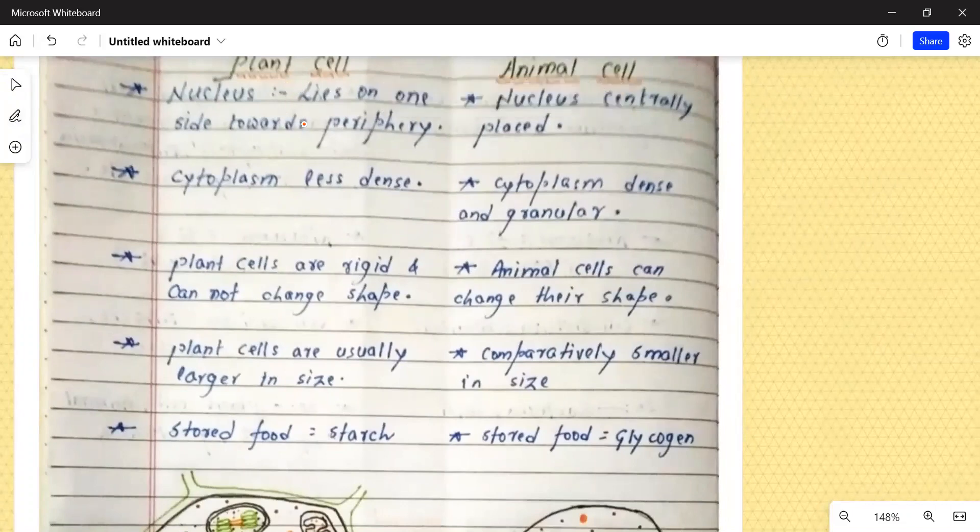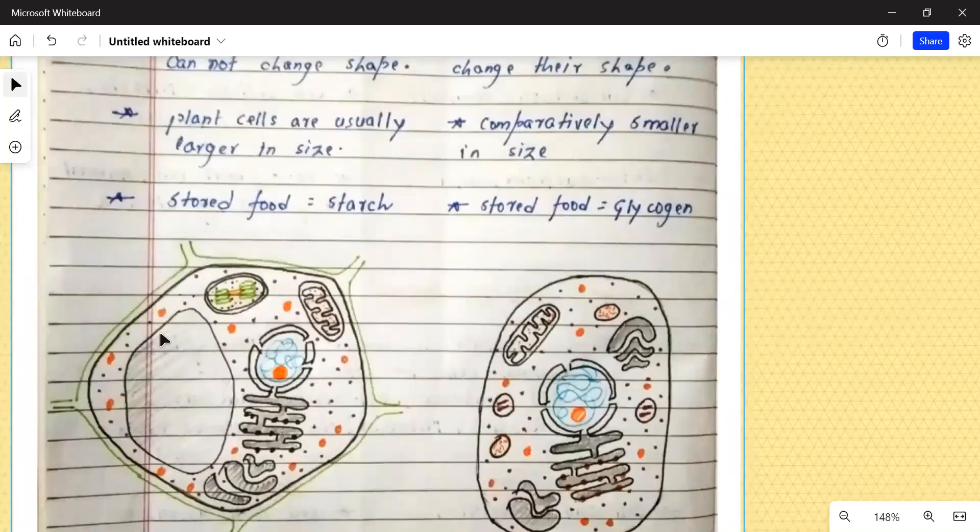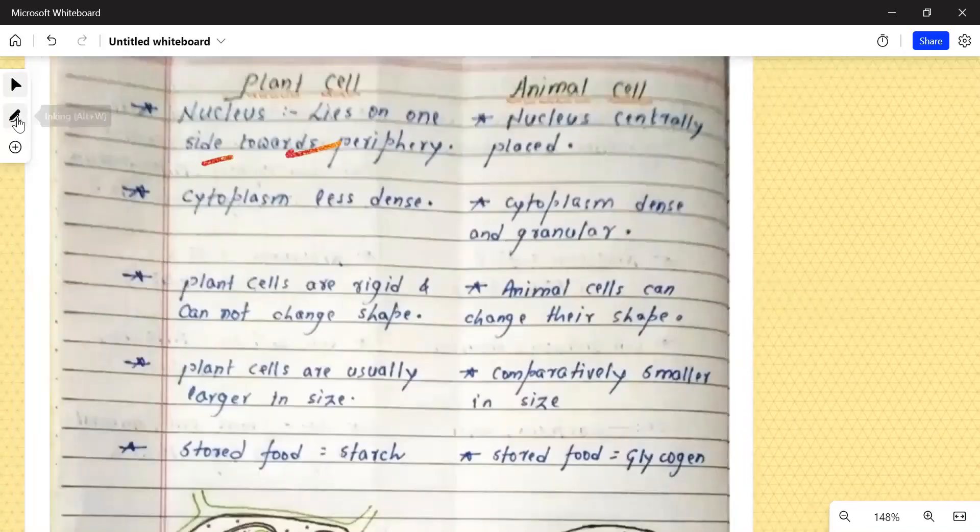Nucleus in case of plant cells lies on the side towards periphery. This is due to large vacuoles, yeh jo aapka nucleus, yeh thoda sa periphery ki taraf aapka move kar jata hai. In case of animals, nucleus is basically centrally located, centrally placed. Basically, woh kahan par hoti hai, center par payi jati hai.